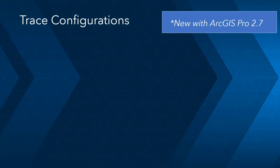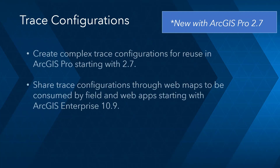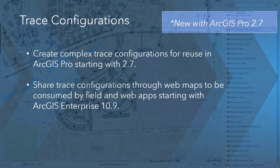Hey everyone, I want to take a few minutes to walk through an exciting new capability called trace configurations that's available with ArcGIS Pro 2.7. Your first reaction might be: haven't we always had the ability to configure a trace using the trace tool? And the answer is yes. We're going to step beyond that now to provide a COTS method to build and share complex trace configurations that's baked right into ArcGIS Pro and the ArcGIS REST API. So without further ado, let's take a closer look.